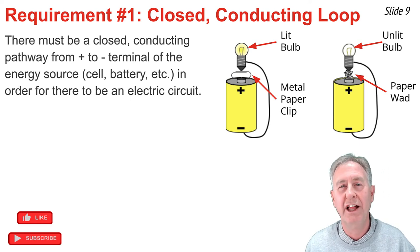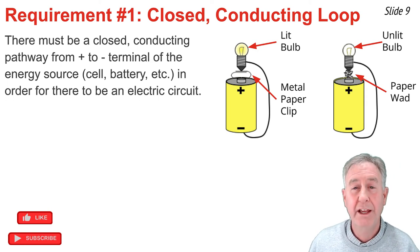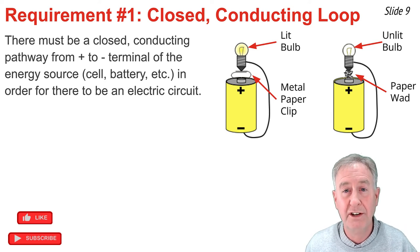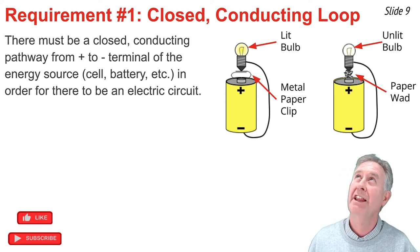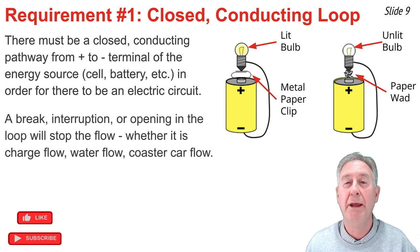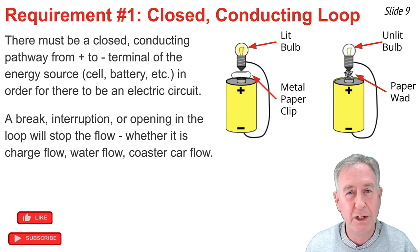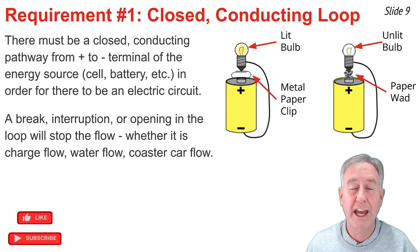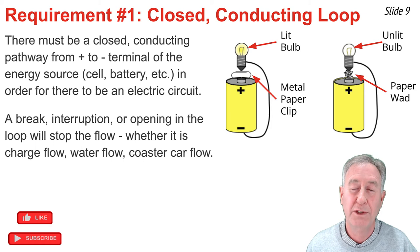When students are doing the cell-wire-bulb experiment, they often experiment with a fourth object, such as a paper clip or a paper wad. In the case of the paper clip, it's made of metal — a conductor — and it doesn't interrupt the closed conducting pathway. But in the case of the paper wad, the light bulb doesn't light, because paper is an insulator and it interrupts the closed conducting pathway. If there's ever a break, an opening, or interruption in this loop, flow will cease — whether it's charge flow in an electric circuit, water flow at a water park, or coaster flow at an amusement park.